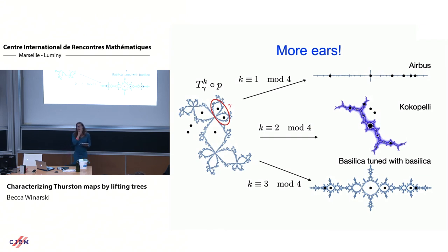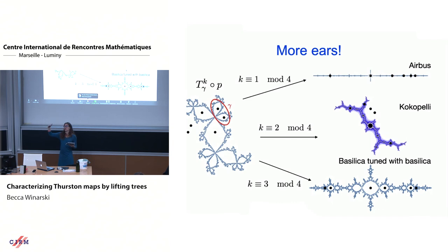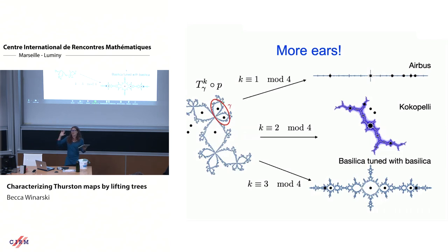Regarding Dierk's question about whether the original three-point case is the only hard case: yes, I think so, because there are more relations in the mapping class group of a punctured sphere with more than four punctures. For k ≡ 0 mod 4 you do the same recursive thing as for the classical rabbit. In the three-point case there are only two other cases instead of three, so some cases fold together. The higher post-critical point cases use different coset representatives for different stages of lifting.